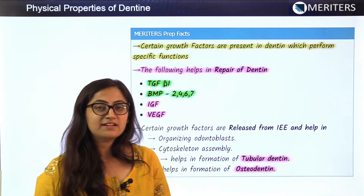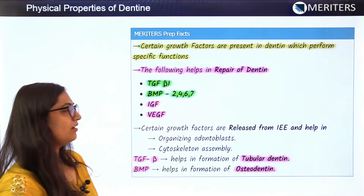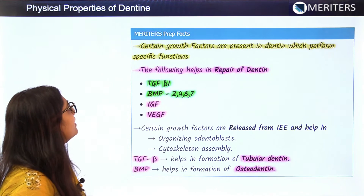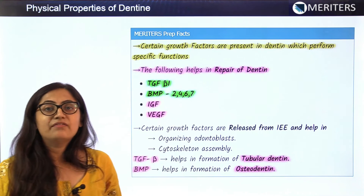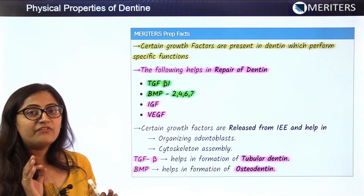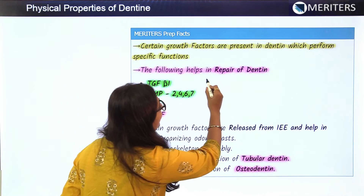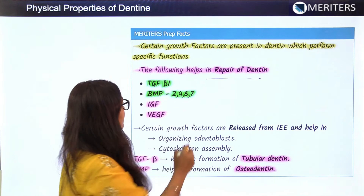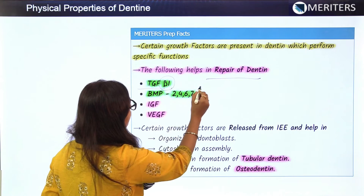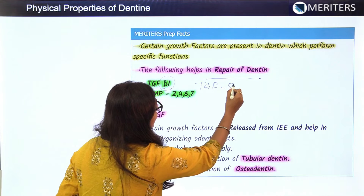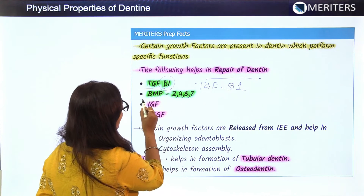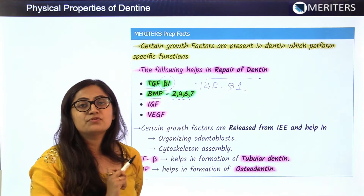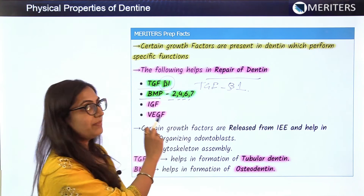Important MCQ facts for NEET exams: certain growth factors play important roles in dentine repair. The most important growth factors that help in repair of dentine are transforming growth factor beta-1 (TGF-β1), bone morphogenetic proteins 2, 4, 6, and 7. These bone morphogenetic proteins play a very important role in dentine repair.